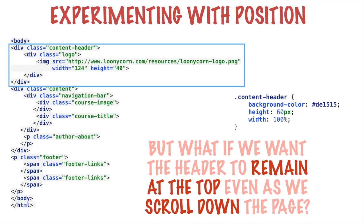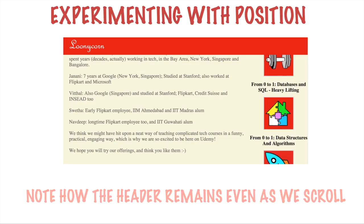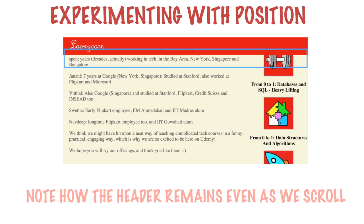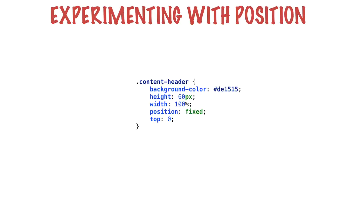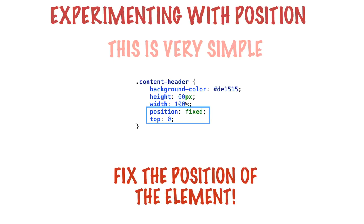But what if we wanted the header to remain at the top even as we scroll down the page? We want the header to be fixed at the top of the browser window even as we are scrolling down. You can see this on screen — we've scrolled a little bit and the header remains. Note that our image overlaps and goes under the header. CSS gives you a way to accomplish this very easily: you simply add two properties to your content header CSS class — position: fixed and top: 0. These are the only two properties you need to fix the header such that when you scroll down, the header remains fixed to the top of your browser window.